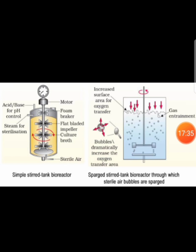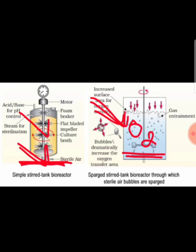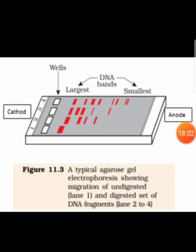Here you can find the representation of two bioreactors — the simple stirred bioreactor, which is the older type, and the sparked bioreactor, which uses spargers that produce oxygen bubbles responsible for greater growth of microorganisms cultured in these bioreactors.